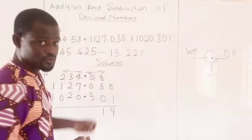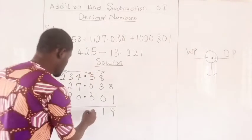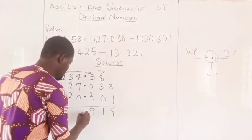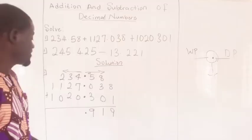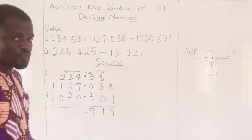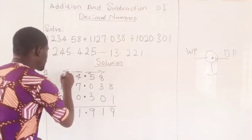Column. Five plus zero is five. Plus three is eight. Plus this one is nine. The decimal point. Four plus seven is eleven. Plus zero is still eleven. You have one. You move one to this.